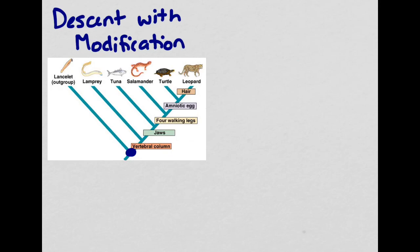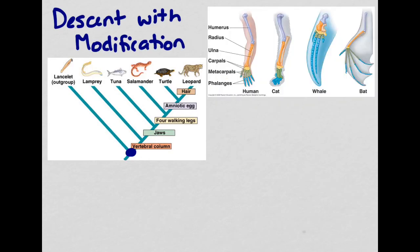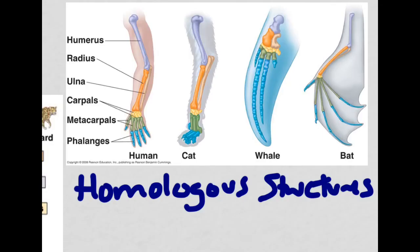However, even though now turtles cannot mate with leopards and are a totally different species, some things are actually really interesting if you look at the skeleton of these organisms. If you look up here, we can see that we have what are called homologous structures. So you're probably pretty familiar with the structure of your own arm: your humerus, your ulna, your radius, your carpals, your metacarpals, your phalanges.